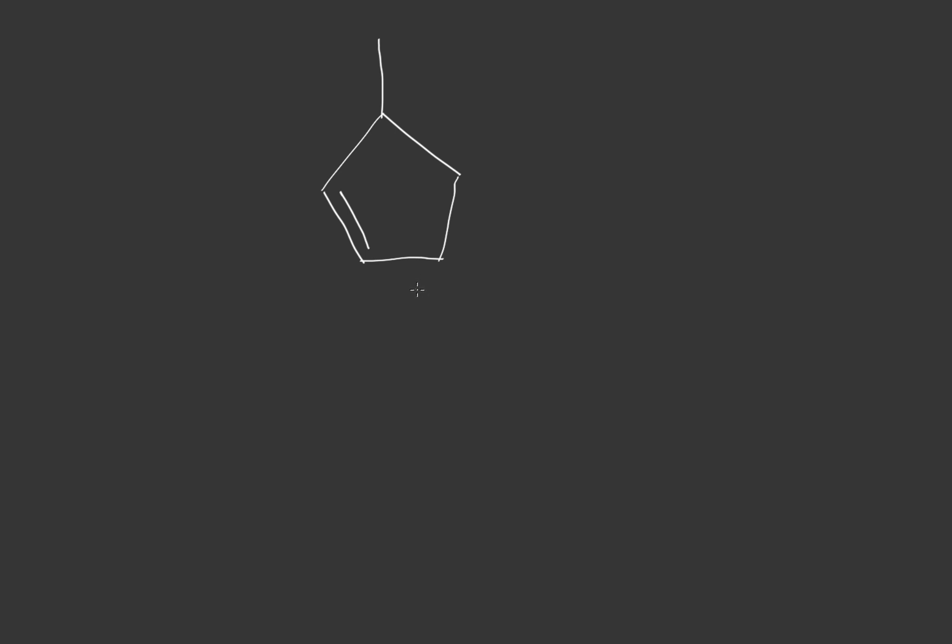What we're going to do with this molecule is find the two major products that we get when we monobrominate this molecule. To do this, we're going to see if there's any resonance stabilized carbons because we see a double bond here.